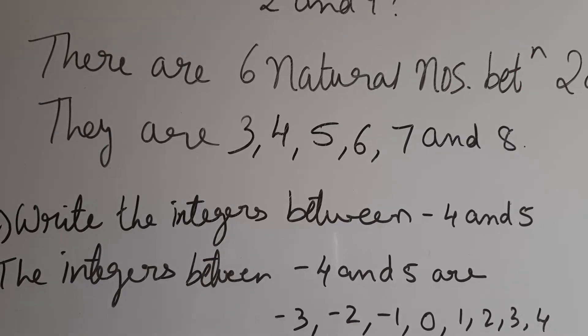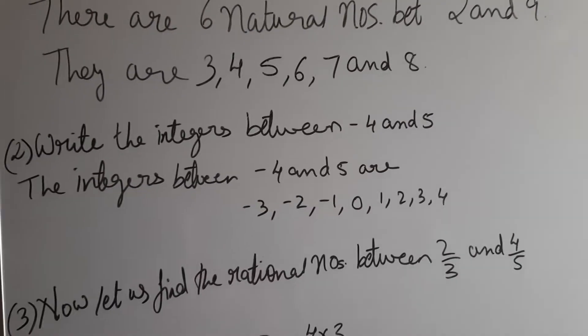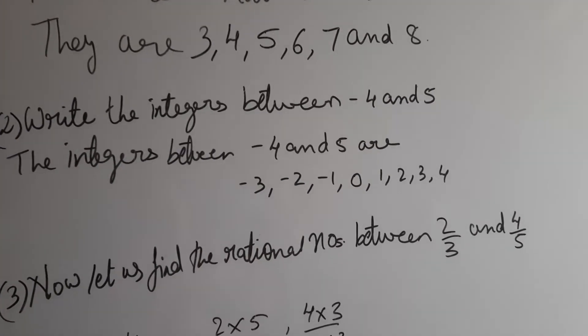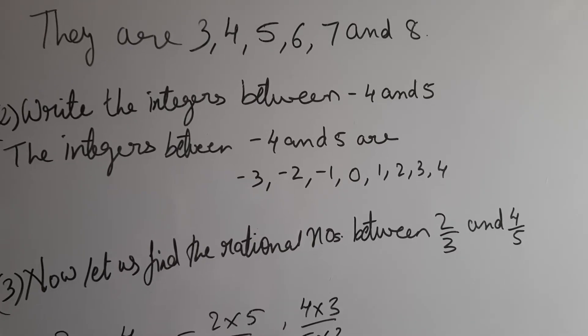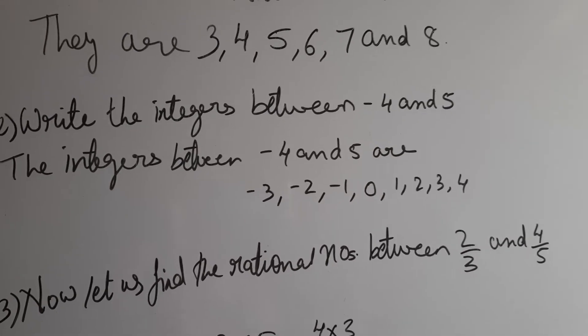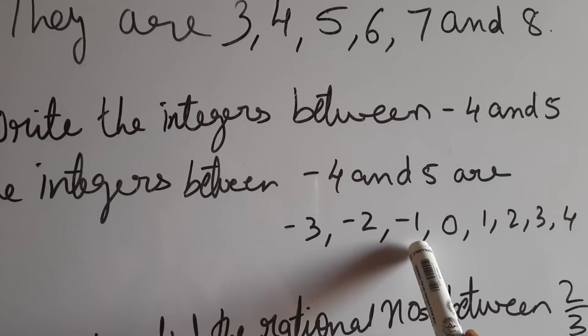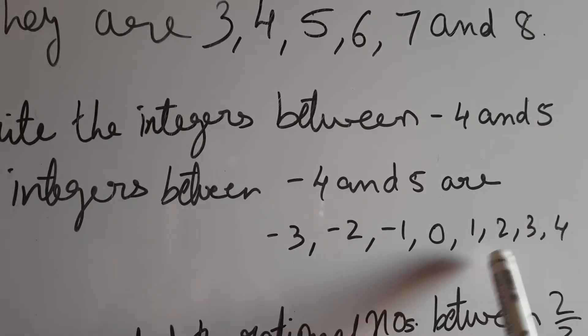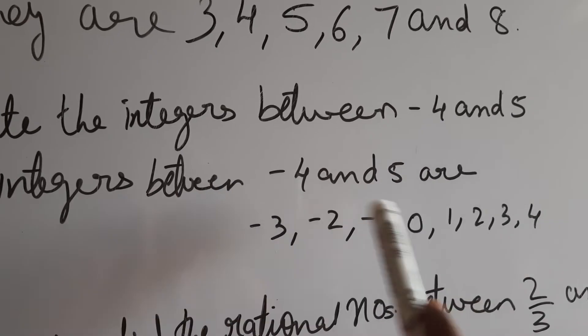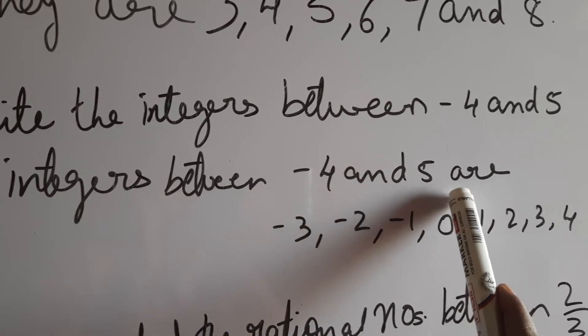So the integers between -4 and 5 are... So the number line, -4 is on the left hand side and 5 is on the right hand side. So we will be having numbers -3, -2, -1, 0, 1, 2, 3, 4. So these are the numbers between -4 and 5, children.